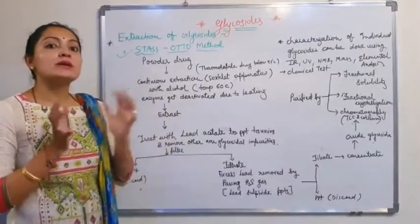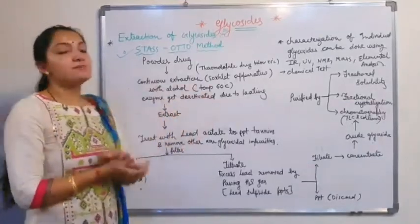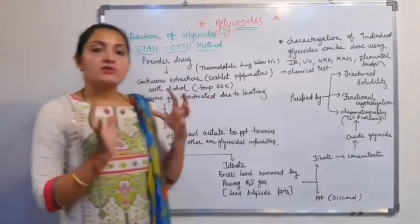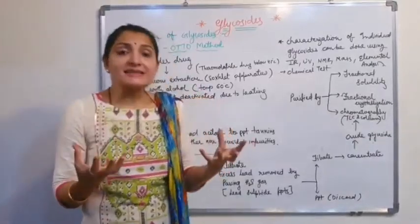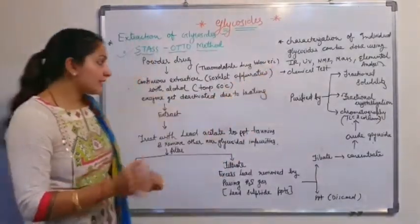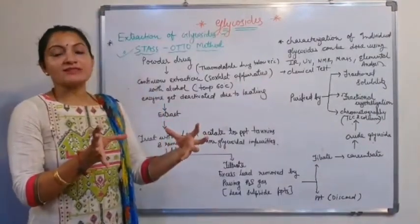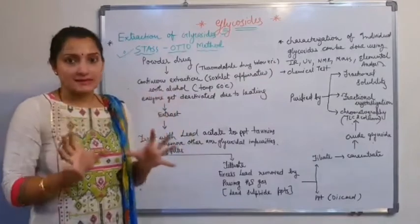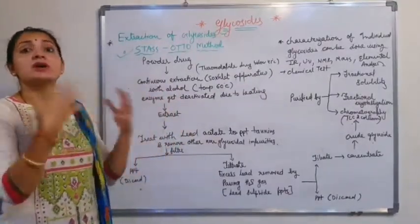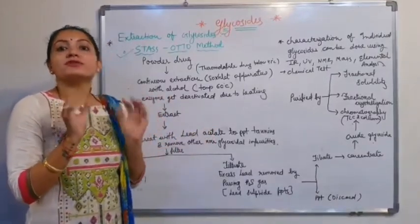Two things to keep in mind: if the drug is heat stable, we keep the temperature at 60 degrees Celsius. If the drug is heat sensitive, we keep the temperature at 40 to 45 degrees Celsius. For thermostable drugs, the Soxhlet apparatus temperature is 60 degrees Celsius, and for heat-sensitive drugs, 45 degrees Celsius.